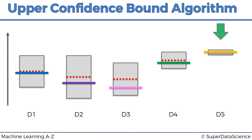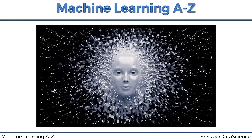That is in essence the whole concept behind the upper confidence bound algorithm and how it solves the multi-armed bandit problem — a much more sophisticated solution than just selecting randomly or running an A/B test. If you're in advertising or come across similar problems, remember the upper confidence bound algorithm. In the next couple of videos, Hadlan will take you through programming this algorithm in both R and Python, and next time we'll be talking about the Thomson sampling algorithm. Enjoy machine learning!